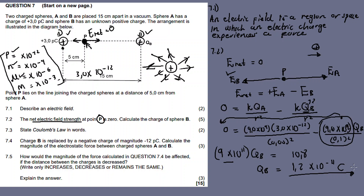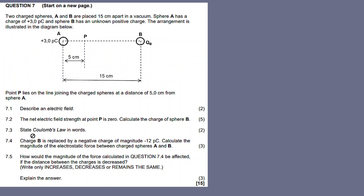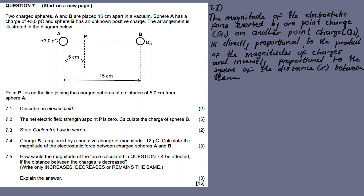7.3 — State Coulomb's law in words. Coulomb's law is defined similarly to Newton's universal law of gravitation, but instead of masses we say charges. The magnitude of the electrostatic force exerted by one point charge Q1 on another point charge Q2 is directly proportional to the product of the magnitudes of the charges and inversely proportional to the square of the distance r between them, measured from center to center.